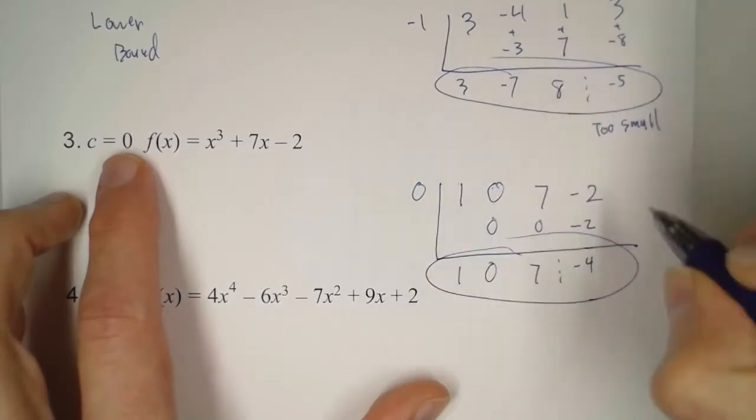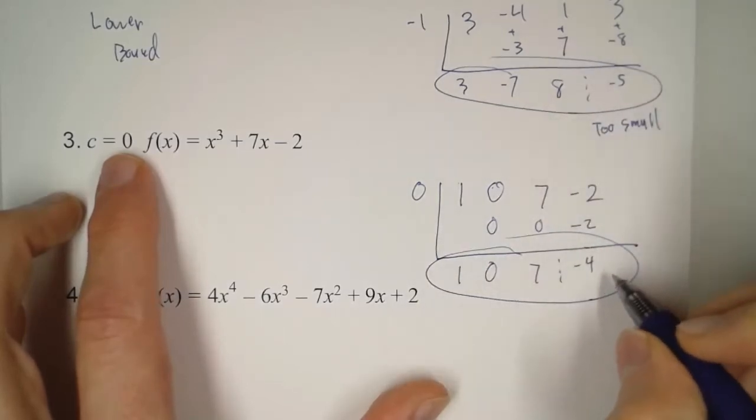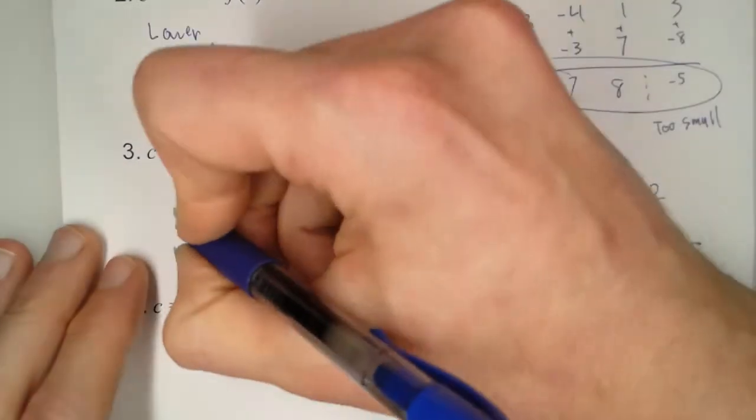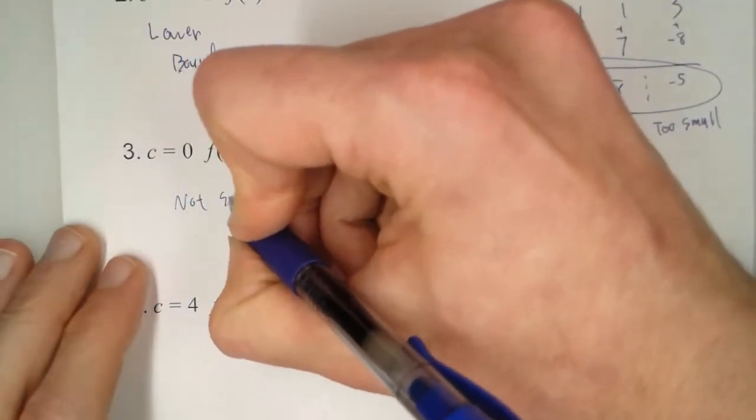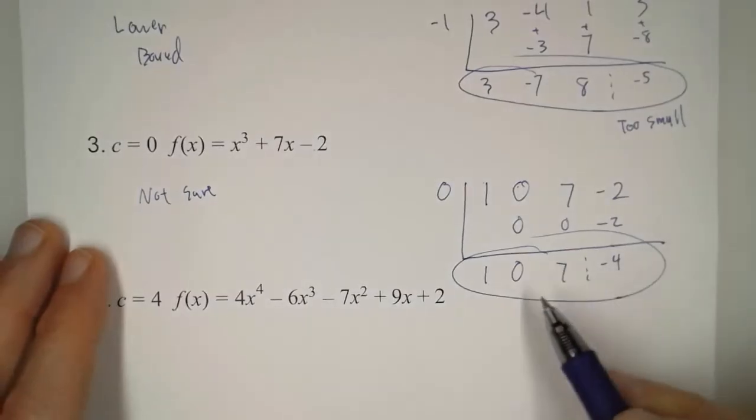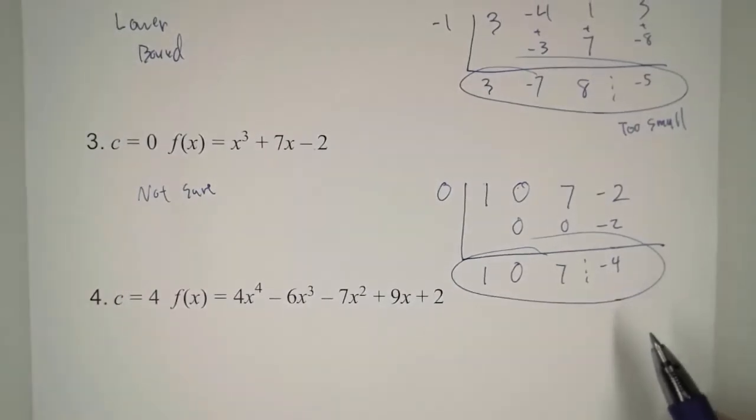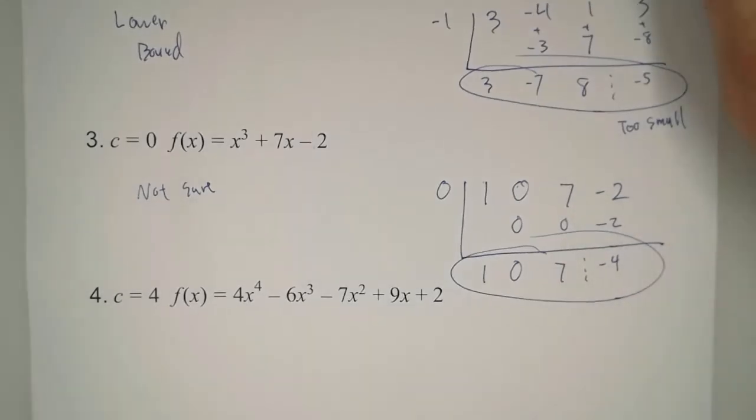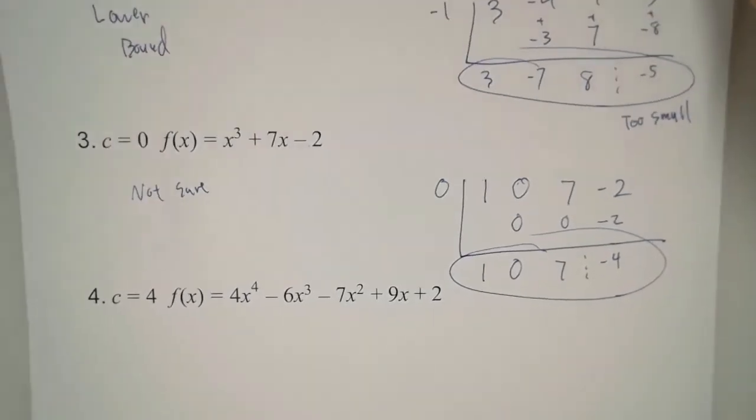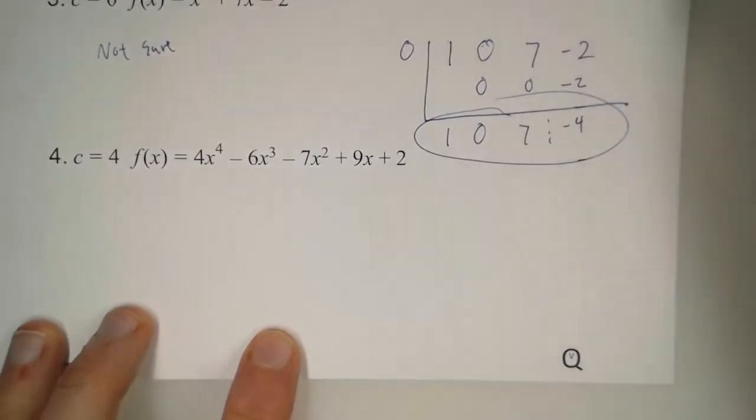Now here we have positive 0, positive, negative. And so for this one, we're not sure. Unfortunately, it's not all positive. It's not plus, minus, plus, minus. So we're kind of stuck with at the moment. But that's okay. It's better to know that we don't know.